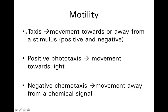We can put prefixes in front of taxis to indicate what type of stimulus is directing the movement. Positive phototaxis is movement towards light, which might be useful if you're a photosynthetic organism that needs to go where the light is to feed itself. Negative chemotaxis would be movement away from a chemical signal — such as a toxin, poison, or antibiotic, which is really a toxin or poison for bacteria.